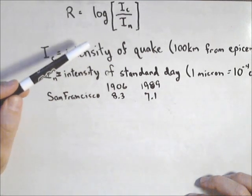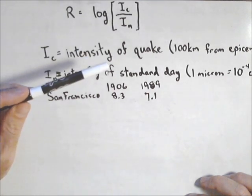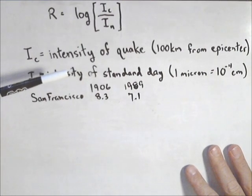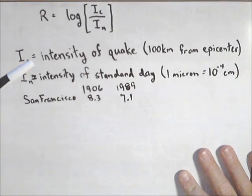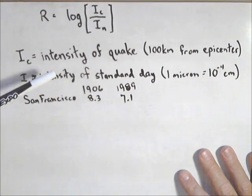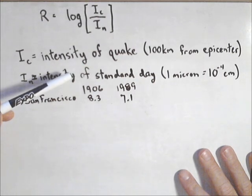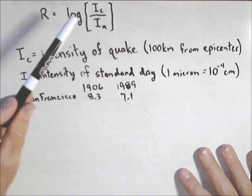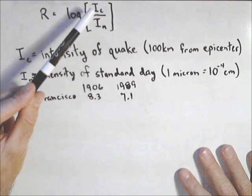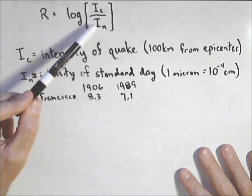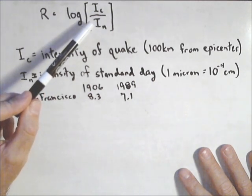In this, I sub c is the intensity of the earthquake, measured 100 kilometers from the epicenter. And I sub n is the measure of the intensity of the movement on a standard day. So basically what this does is it takes the relative movement by taking the amount of movement on the day of the earthquake divided by the amount of movement on a standard day.